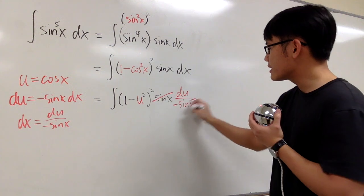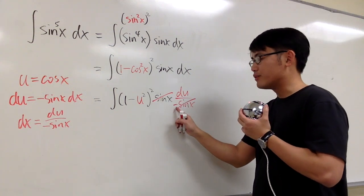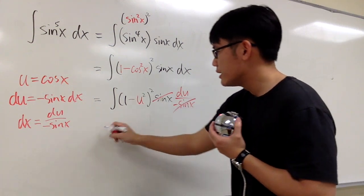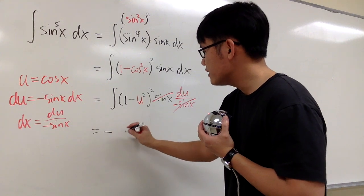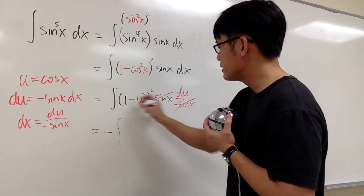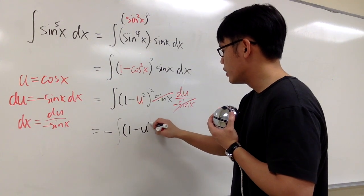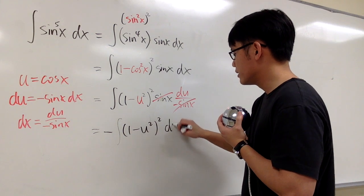And then you see the sin x will cancel each other out, so I will have to have this negative. Let's take it outside first. So here we have negative integral of, this is going to be 1 minus u squared and then square du.